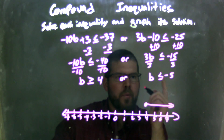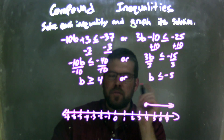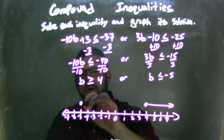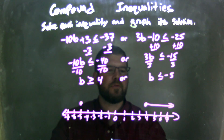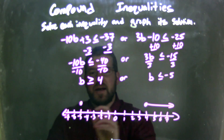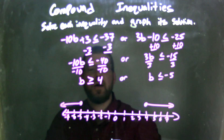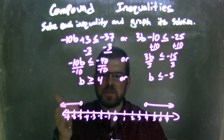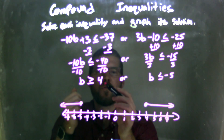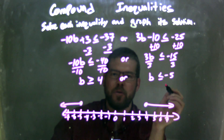We have another part where b is less than or equal to negative 5. Since it can equal negative 5, I place a closed circle at negative 5, and since b is less than negative 5, I put my arrow to the left. Now I have a graph that matches my inequalities: b is greater than or equal to 4 or b is less than or equal to negative 5.